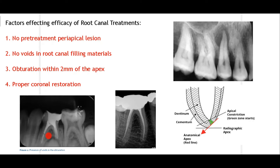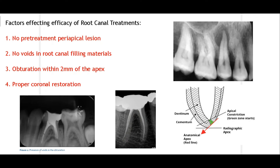Thirdly, the obturation should be within 2 mm of the apex — we must ensure the material is not under-extended (more than 2 mm from the apex) or over-extended (material coming out of the apex). Lastly, proper coronal restoration should be placed. As seen in this radiograph, a coronal restoration has been placed and the obturation is well-performed with no voids, with the GP cones forming the proper shape of the canal.